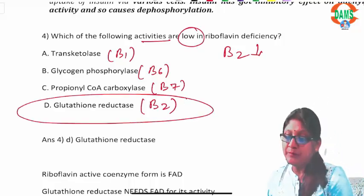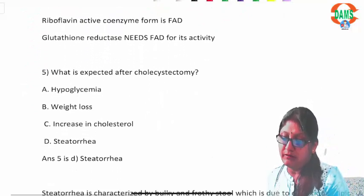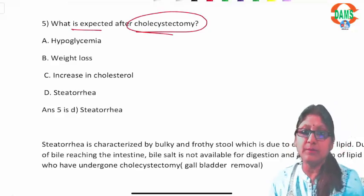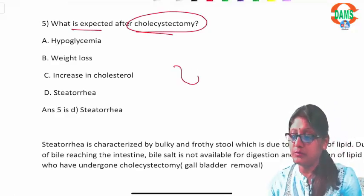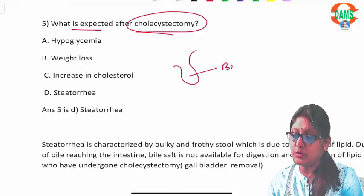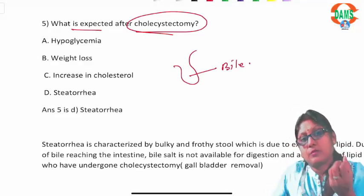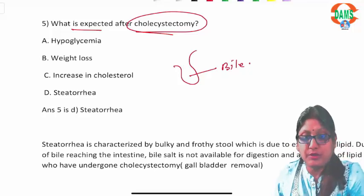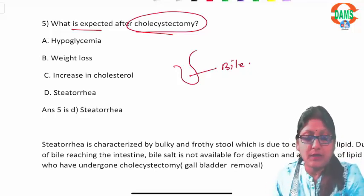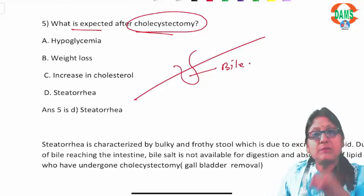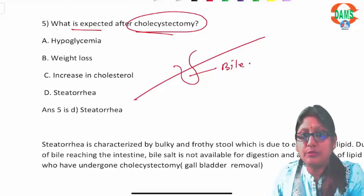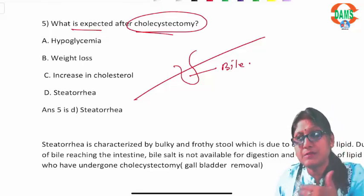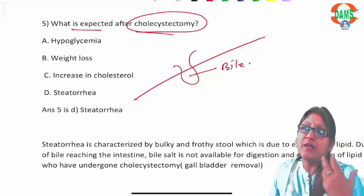Question five asks what is expected after cholecystectomy — removal of the gallbladder. The gallbladder stores bile and contracts during a fatty meal, releasing bile into the duodenum. After cholecystectomy, bile produced by the liver goes directly to the intestine regardless of meal timing, so during a fatty meal the bile may not be available at the right time.